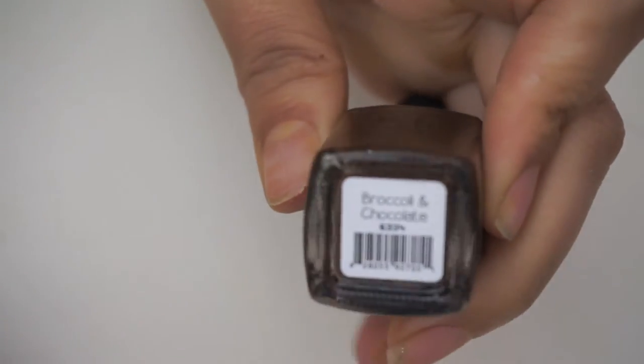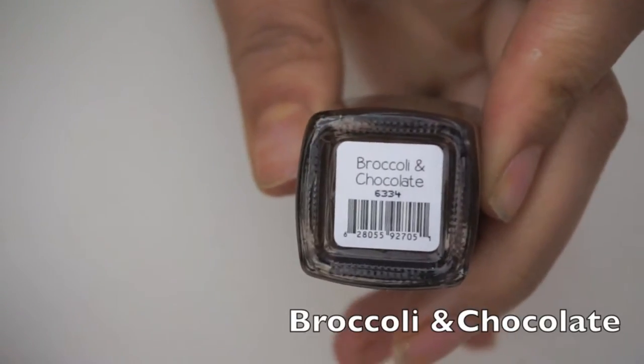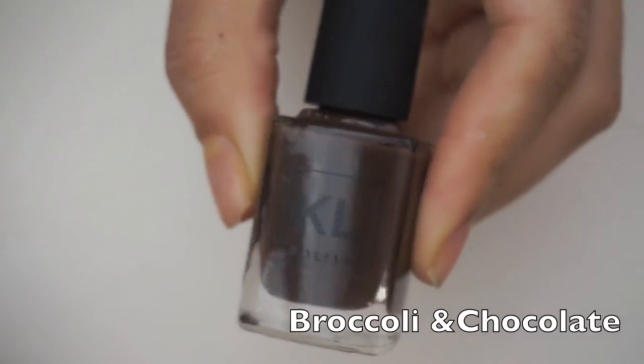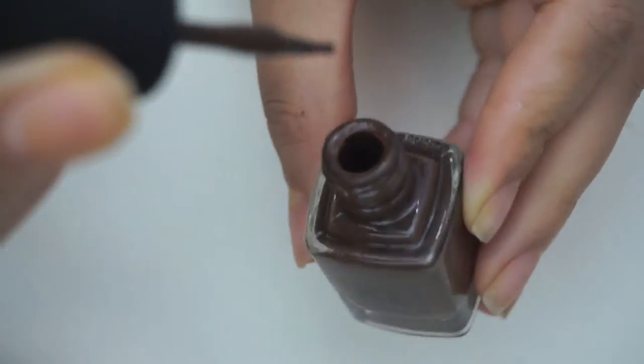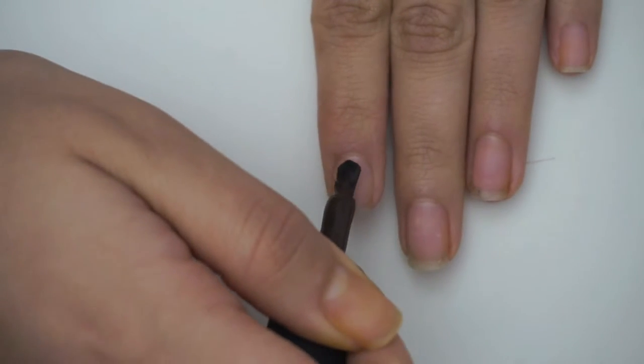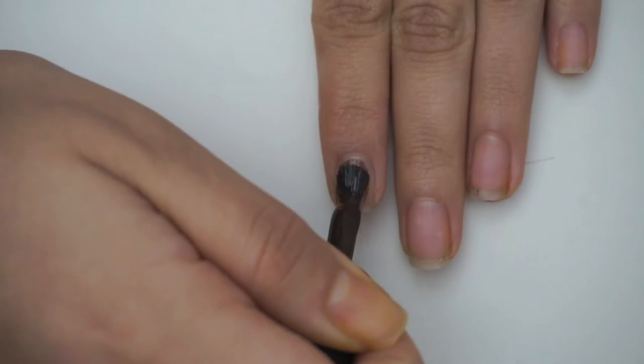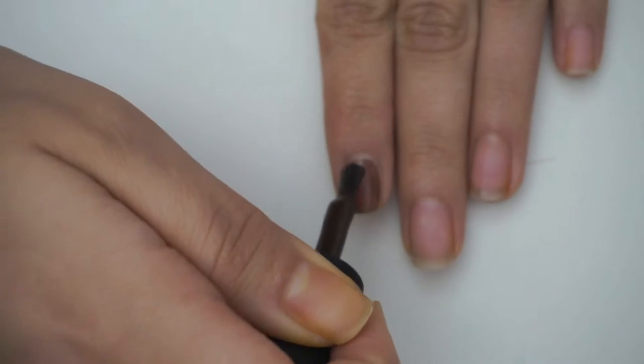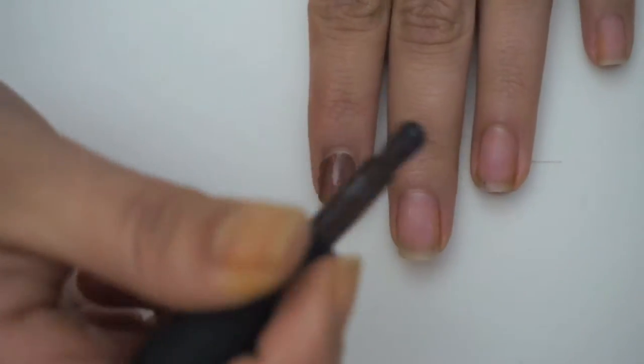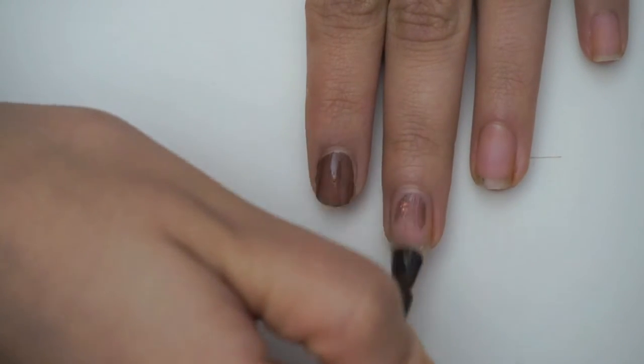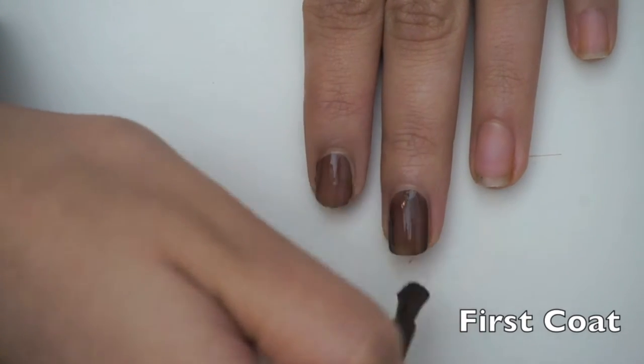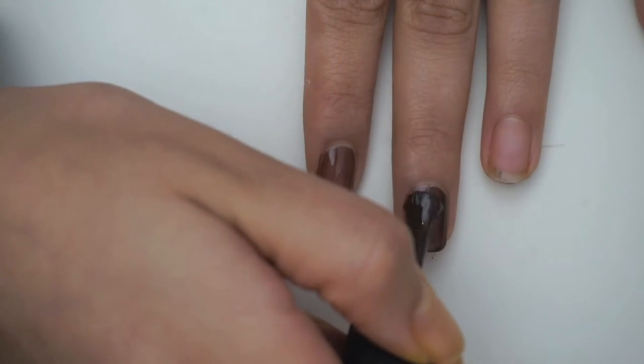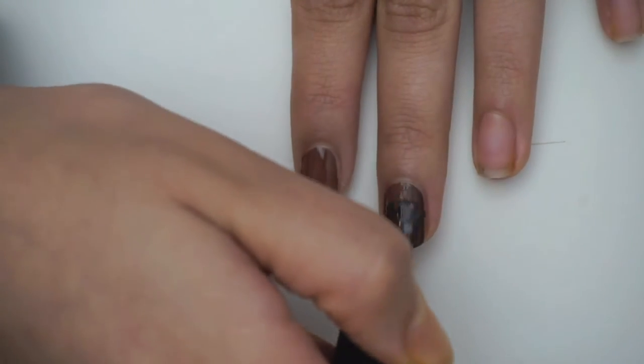The next color I'm going to be talking about is Broccoli and Chocolate, and this is actually my least favorite from the collection. It's not because I don't like the color - I think the color is actually really unique - it is because of the formula. As you can see in this clip, it is very sheer and you need at least three coats to build it up to get to the color that you actually want, the color that is actually shown on the bottle.